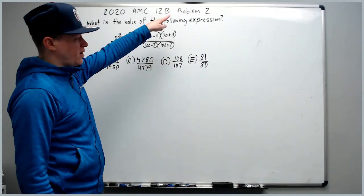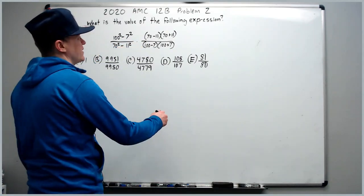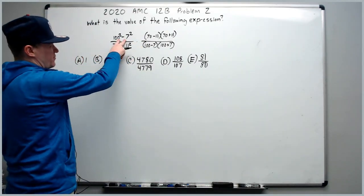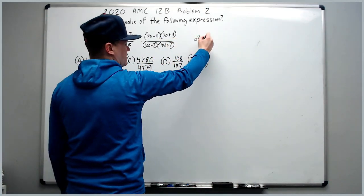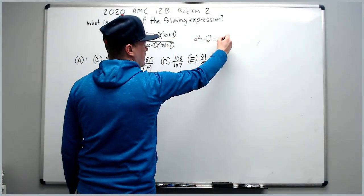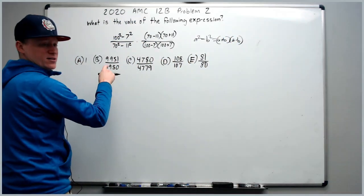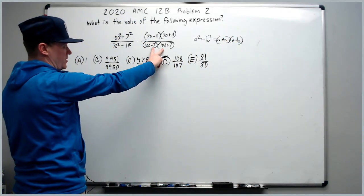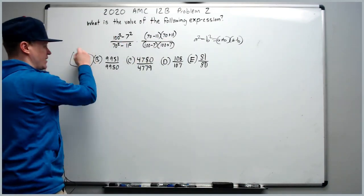Continuing on with the 12B problem 2, the value of this expression is what they want. You can observe that this is a squared minus b squared, which factors into (a plus b)(a minus b) as a difference of squares. Because of that, everything cancels and you get a.